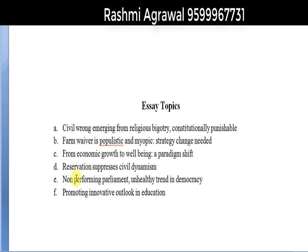While analyzing all six essay topics that have come this year, it seems that question setters set the essay topics in such a way that they always have four or more words. The first topic has eight words, the second nine, the third nine, the fourth five, the fifth seven, and the sixth five words. Any essay topic with one or two words is very easy to write. However, when the essay topic is long, the writing becomes a little challenging, because you have to justify every word in your essay, or you leave out major key components.